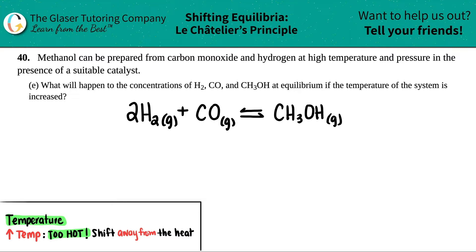So now we have letter E out of the bunch. In this case they say what will happen to the concentrations of H₂, CO, and CH₃OH at equilibrium if the temperature of the system is increased.